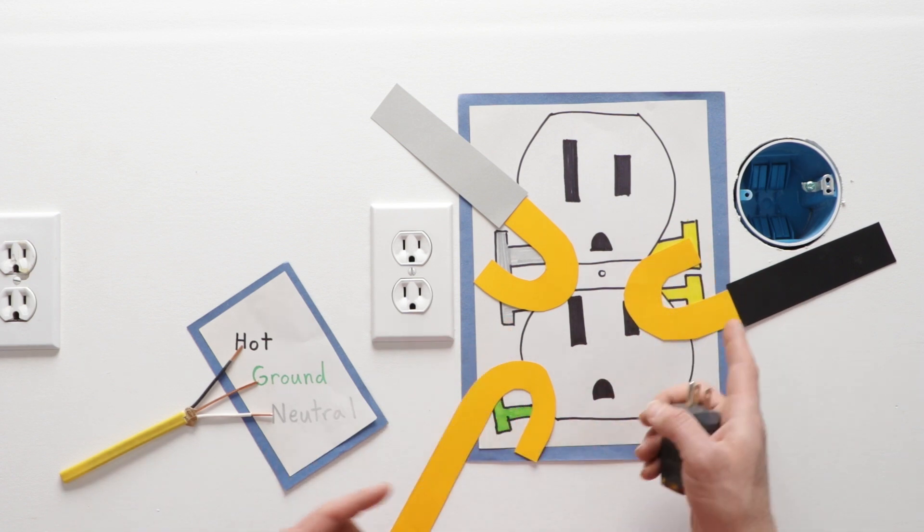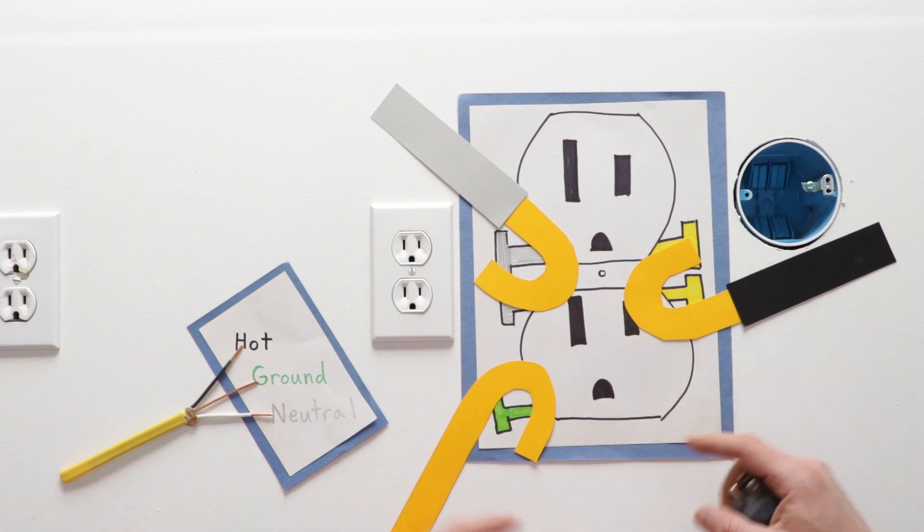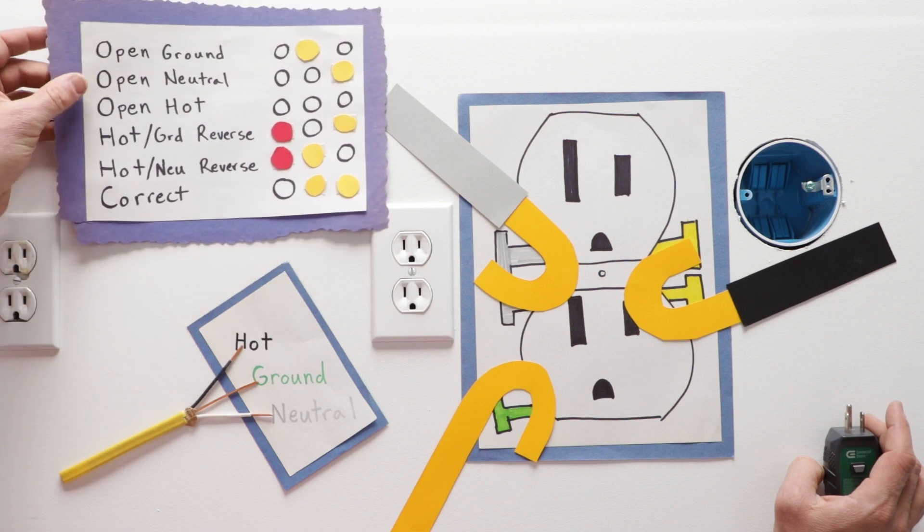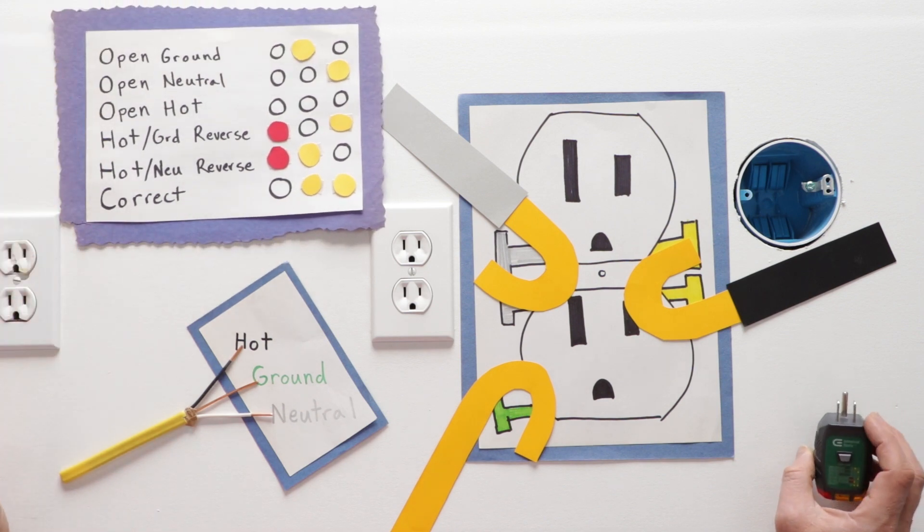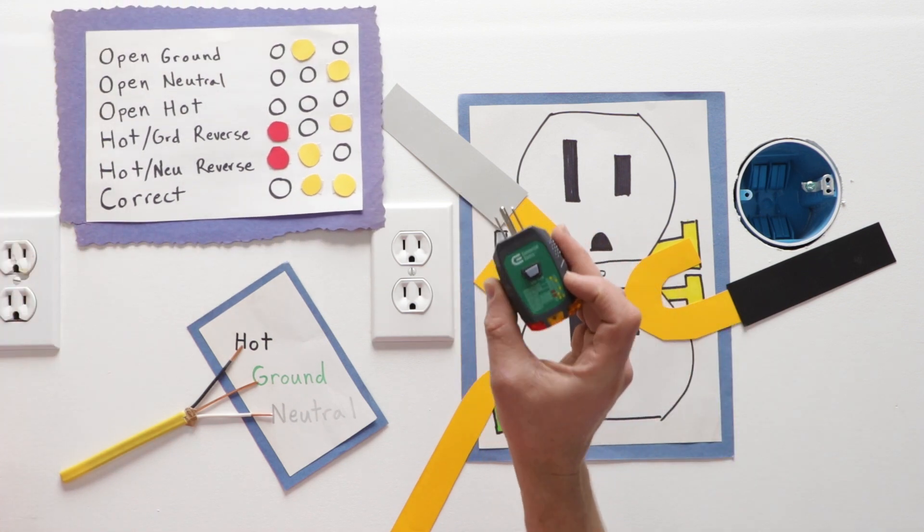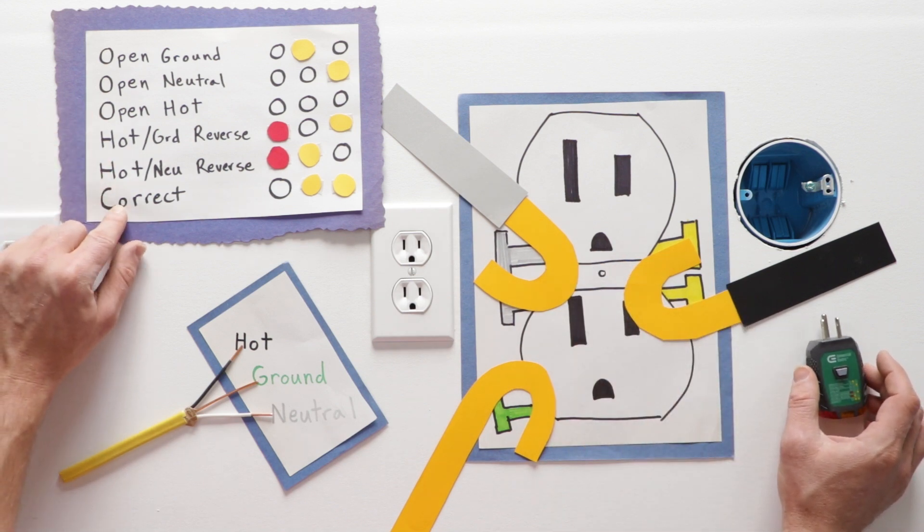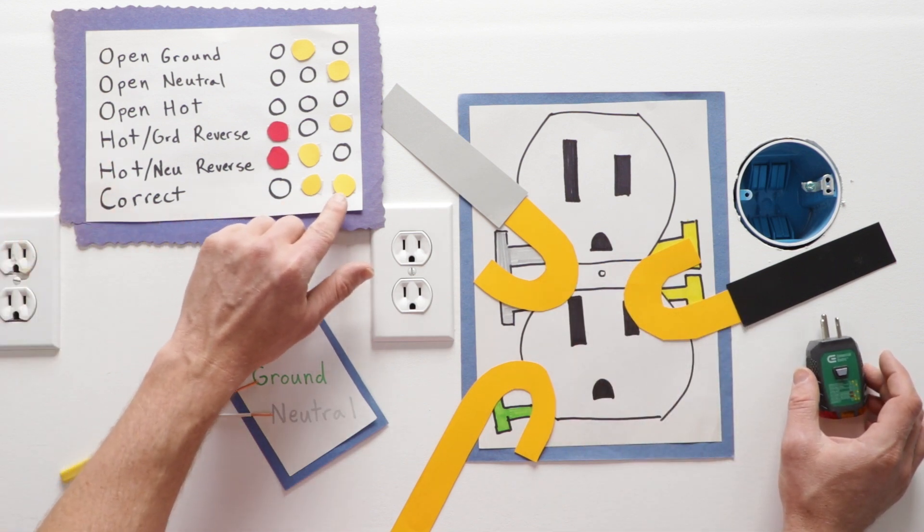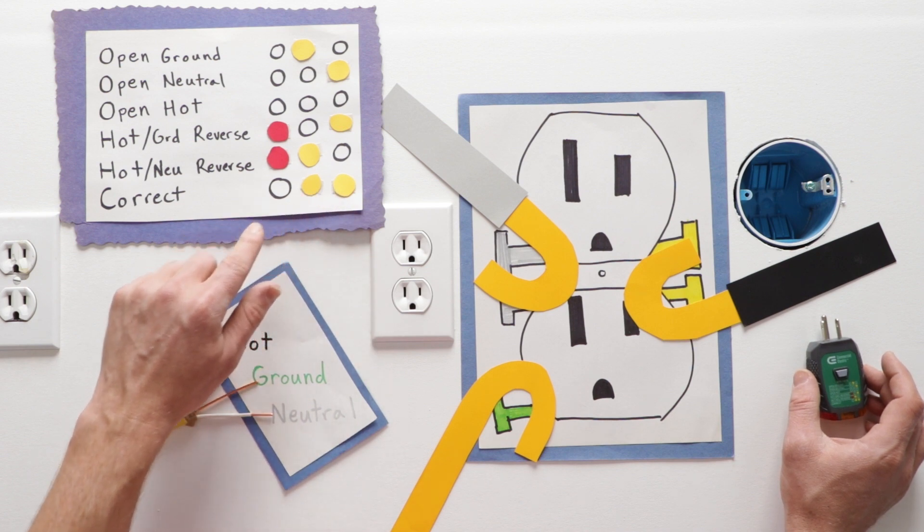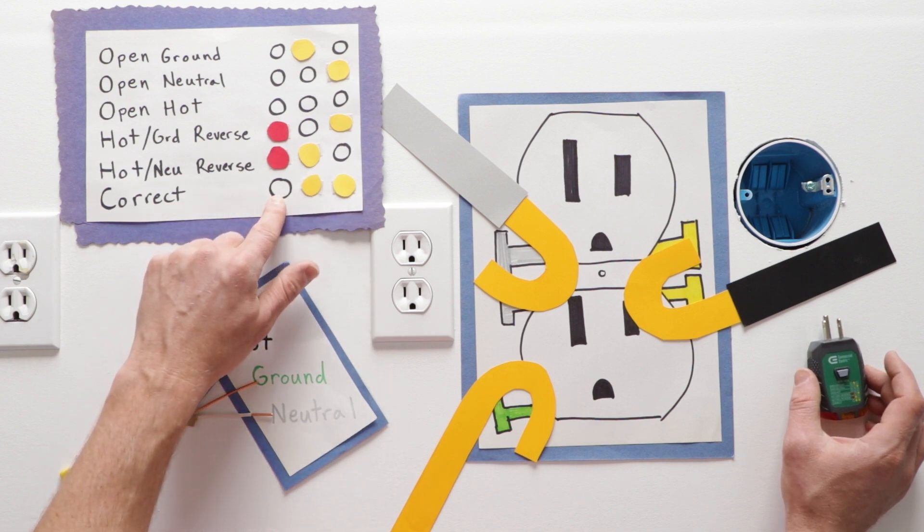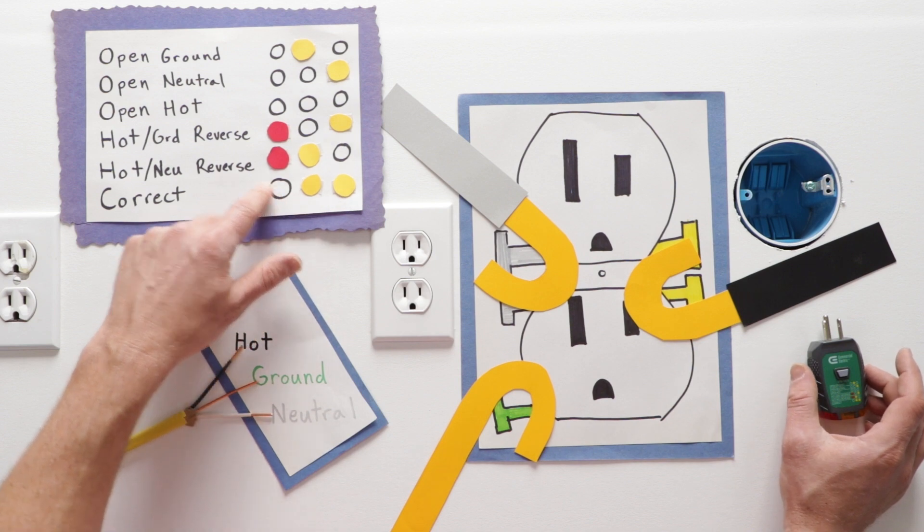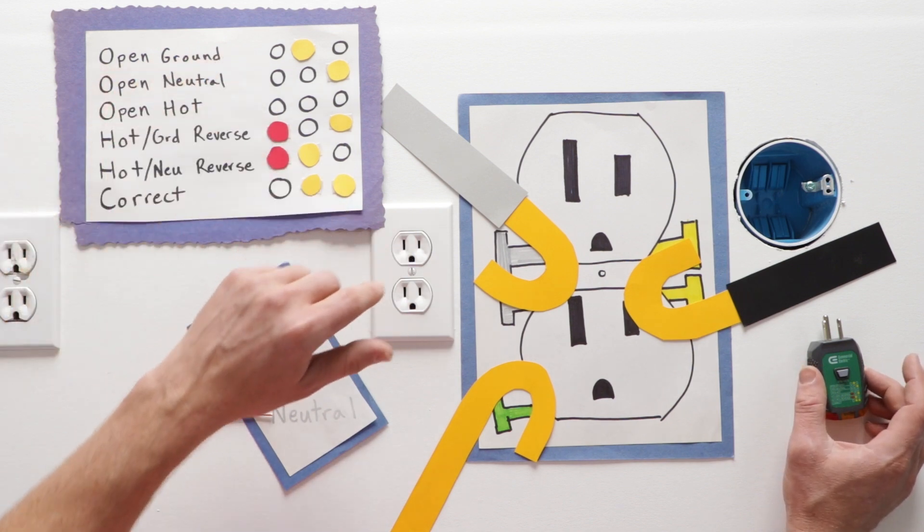But sometimes these can get mixed up, switched around. Here we have our legend for what the different things mean. On the bottom, we have the correct. This is what we want to see: two yellow dots and nothing in the red slot. Starting from top to bottom, I want to go through all of them.